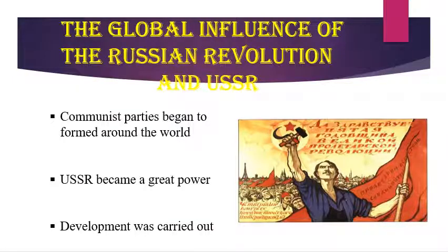The global influence of the Russian Revolution and USSR. Some points on the global influences: first, although Bolsheviks were criticized for the way they worked, they were once popular across the world. Second, Communist parties began to be formed around the world. Then socialism received a global presence. No doubt, the USSR became a great power with the development of industries and agriculture, though development was carried out with repression. Lastly, socialist ideas were rethought around the world. These are the influences of the Russian Revolution on the world.